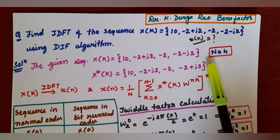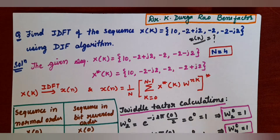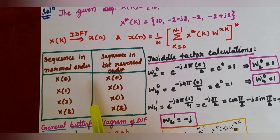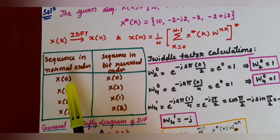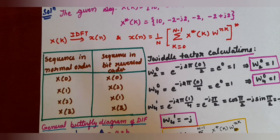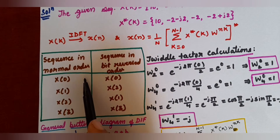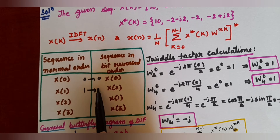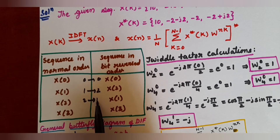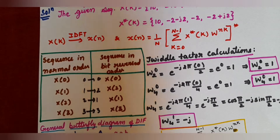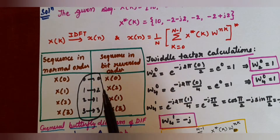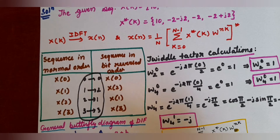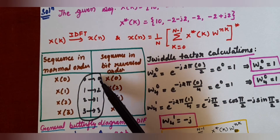From given X(k), find x*(k) by changing the sign of the imaginary part. Now, the bit reversal table: in DIF, the input is in natural order and the output is in bit reversal order. For example, 0 stays 0, 1 is changed to 2, 2 is changed to 1, and 3 stays 3. So the bit reversed order for {0,1,2,3} is {0,2,1,3}. You have to remember this bit reversal order.